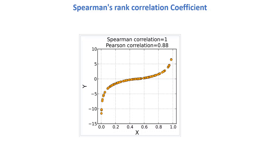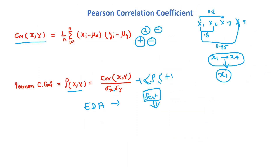In our previous class we discussed the Pearson correlation coefficient, where we used the formula: covariance of x and y equals 1 by n, summation i equals 1 to n, of (xi minus μx)(yi minus μy). The Pearson correlation coefficient is defined as covariance of x and y divided by standard deviation of x and standard deviation of y.